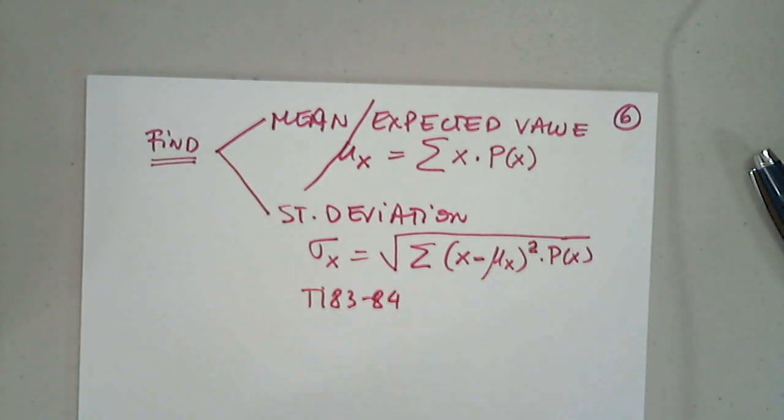So, let's practice this. I'm going to share my screen. And let's look at 6.1. And then we have a specific type of discrete random variable, which will be binomial. And that will be the end of the material for the midterm.